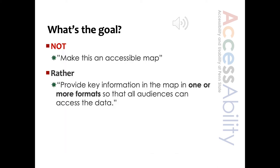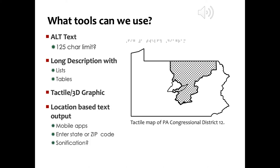We've reviewed some different types of maps, but not necessarily all the possible alt text strategies. When thinking about your map, it's important to remember that the goal is not to make this an accessible map, but rather provide key information in the map in one or more formats so that all audiences can access the data. Here are some of the approaches we have or could take: alt text, long description, long description with lists and tables, a tactile or 3D graphic, or location-based text output such as in a mobile app — being able to enter a state or zip code — or sonification.